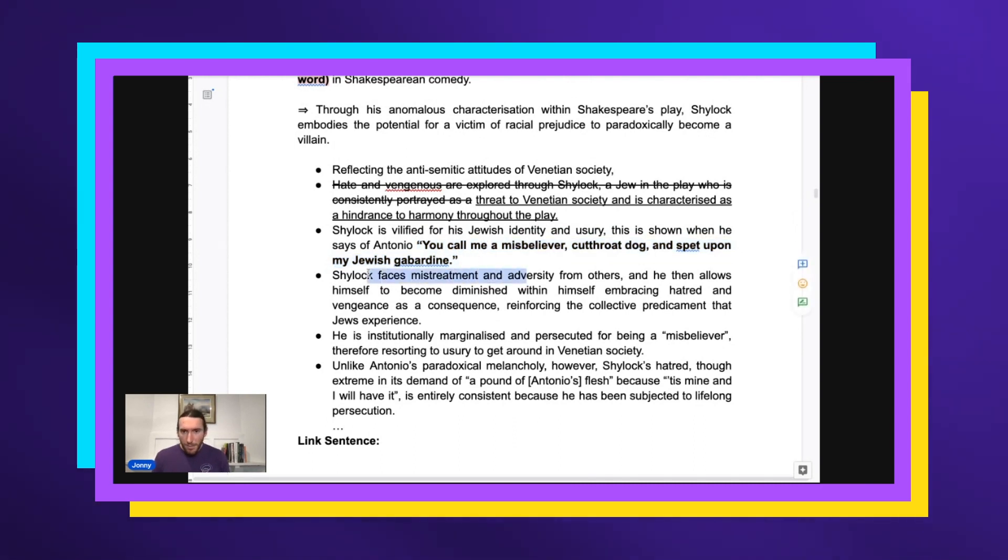Shylock faces mistreatment and adversity from others. That's storytelling—you're not linking it, it's not presented in an analytical framework. Then 'allows himself to become diminished, he's institutionally marginalized and persecuted for being a misbeliever.' They're just reusing the quote. There are no techniques.